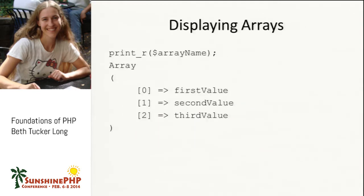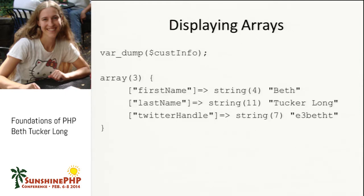To display arrays, if you just echo `$_POST` you'll only get the word 'Array' — that means you're echoing the top of the array instead of a specific item. To see everything inside, use `print_r()` — a recursive print — which goes through each item and shows the keys, the pointer, and the values. Alternatively, `var_dump()` gives a bit more information: it shows the array size and tells you the data type and length of each value, like 'string, 7 characters long.'